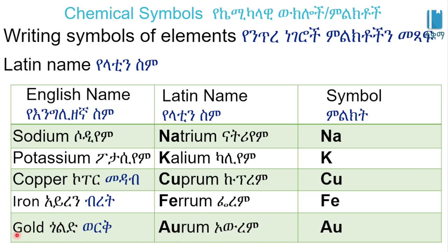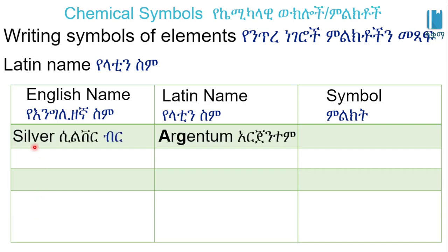Gold — the Latin name is 'aurum,' so the symbol is Au. The symbol Au comes from the Latin word aurum, and that is why Au represents gold. Silver — the Latin name is 'argentum,' so the symbol is Ag. Ag comes from argentum and represents silver.